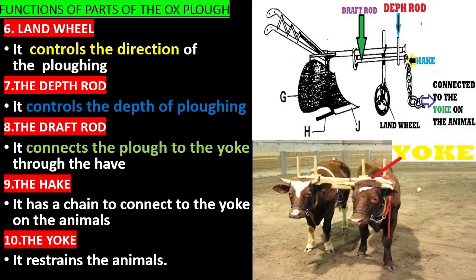The draft rod connects the plow to the yoke through the hake. The hake has a chain to connect to the yoke on the animals.